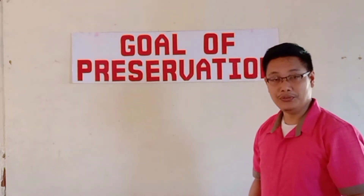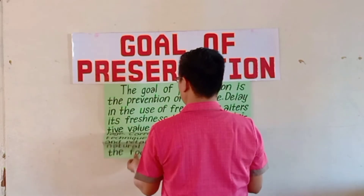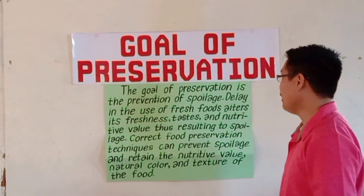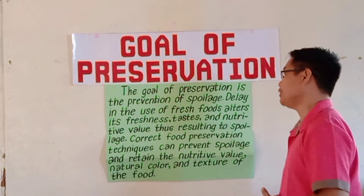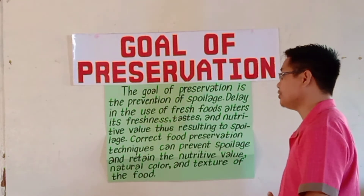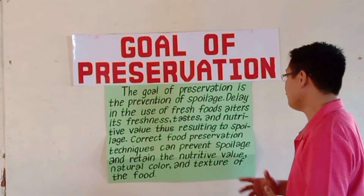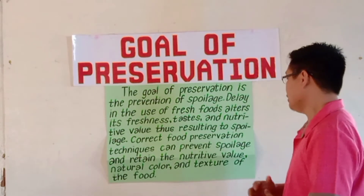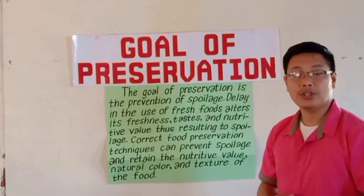Now let's move on to the goal of food preservation. The goal of food preservation is the prevention of spoilage, delay in the use of fresh foods, and to retain its freshness, taste, and nutritive value. Correct food preservation techniques can prevent spoilage and retain the nutritive value, natural color, and texture of the food.